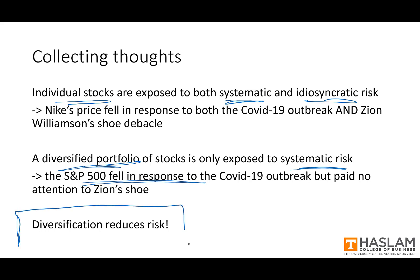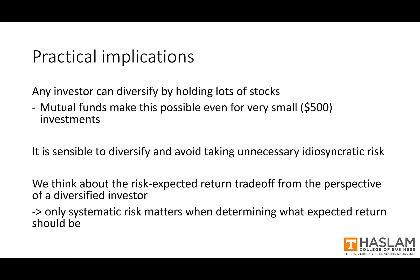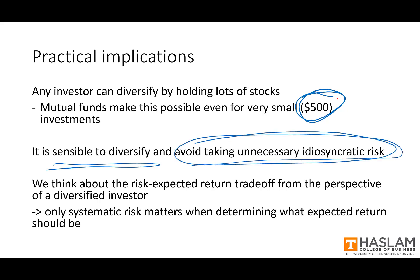So what's the moral of the story? Diversification reduces risk. Any investor can diversify by holding lots of stocks, and the advent of the mutual fund makes this possible even for the smallest of investments — think investments as small as $500 or so. Because it is so easy and simple to diversify, it's sensible to do so, as this allows one to avoid taking unnecessary idiosyncratic risk. Going forward, we're going to think about the risk/expected-return trade-off from the perspective of a diversified investor, and we'll establish that only systematic risk matters when determining what expected return should be.